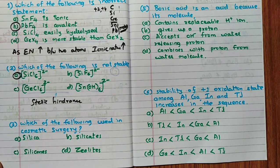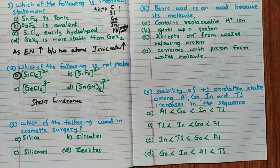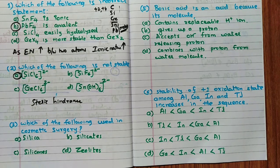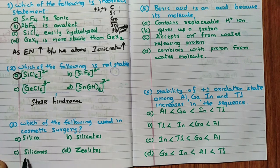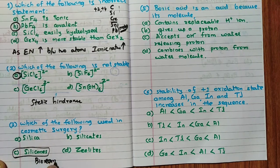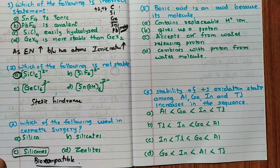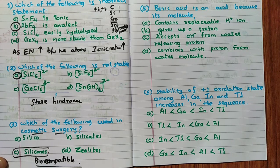The third question asks which compound is used in cosmetic surgery. Silica is sand — not used. Silicates form glass and cement — not used. Zeolites are used for softening hard water or as shape-selective catalysts. Silicones, however, are biocompatible, meaning they can adjust with biological tissues easily. Because of this property, silicones are used in cosmetic surgery.